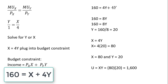So x equals 80 and y equals 20 is the utility maximizing consumption bundle. Plugging these values back into the utility function u equals x times y, we see this consumer has 1,600 units of utility.